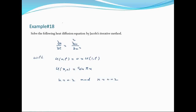Example number 18. Solve the following heat diffusion equation by Jacobi iterative method. This is a one-dimensional heat equation with two variables x and t.